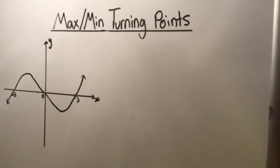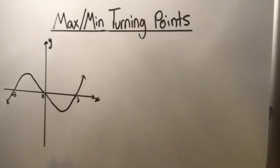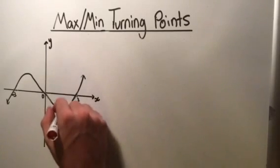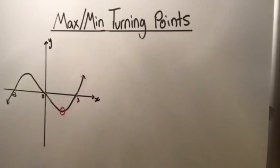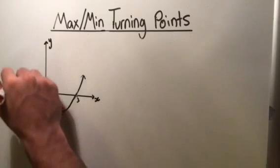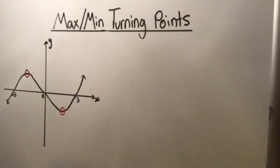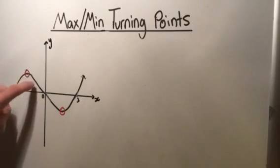The first derivative is going to be used to find what these turning points are. When we're talking about turning points, we can look at this graph that I've drawn. We're talking about the points where the curve turns around — so in this case we're looking at this point, and up here we're looking at this point. You can see here that the curve turns.